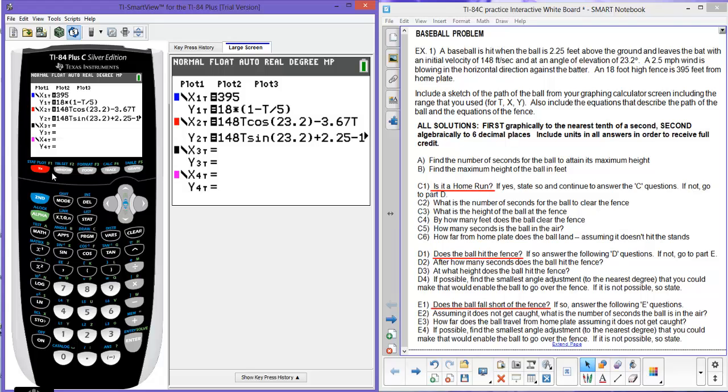x2t and y2t are equations that describe the path of the ball. The 148 came from the initial velocity. The 23.2 is the initial angle of elevation. The two and a quarter is the initial height, and I had to change 2.5 miles per hour to feet per second, so that's where the minus 3.67t came from.